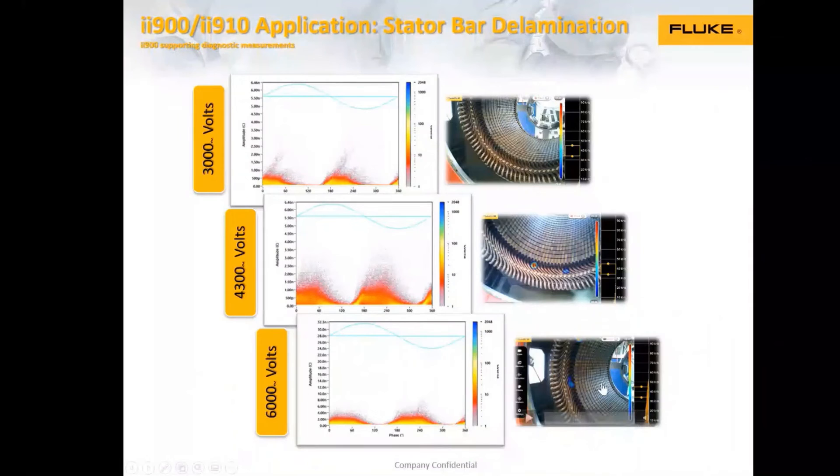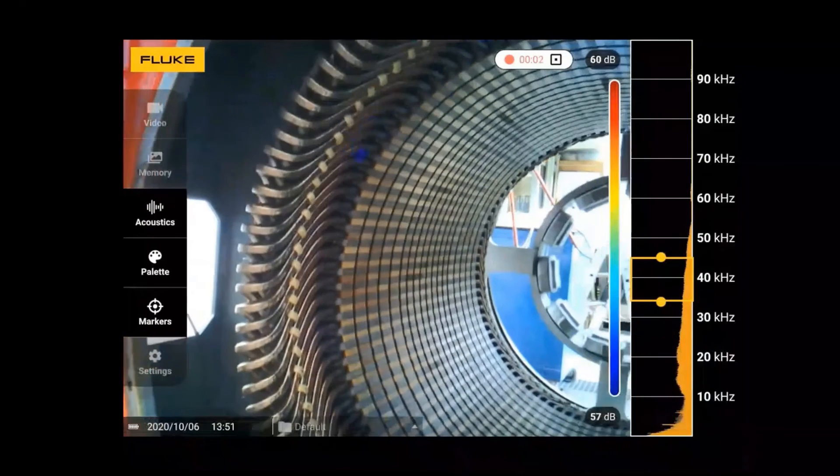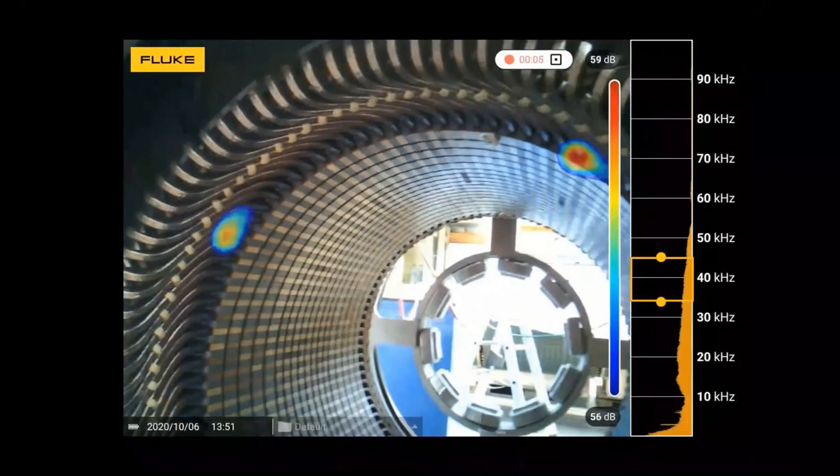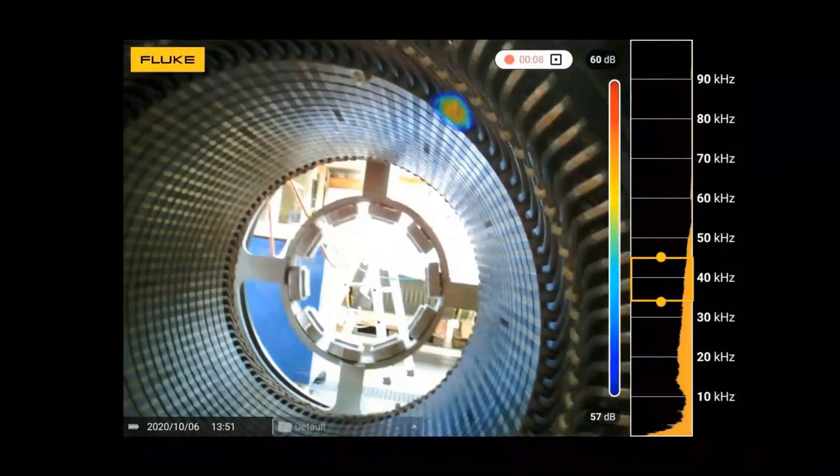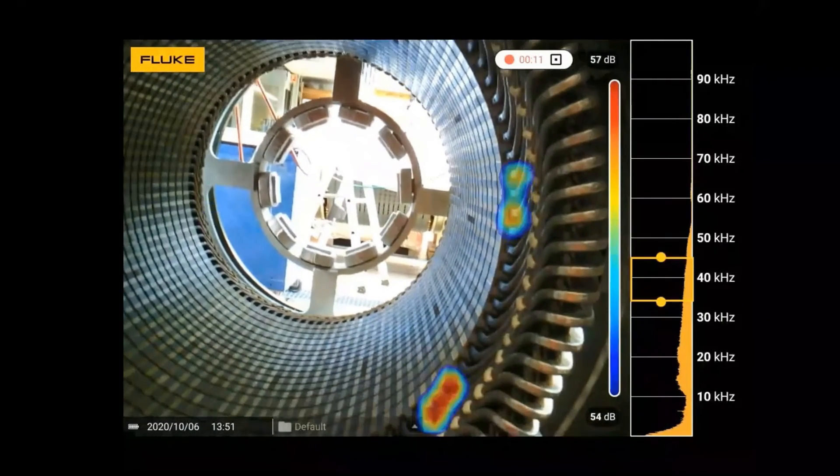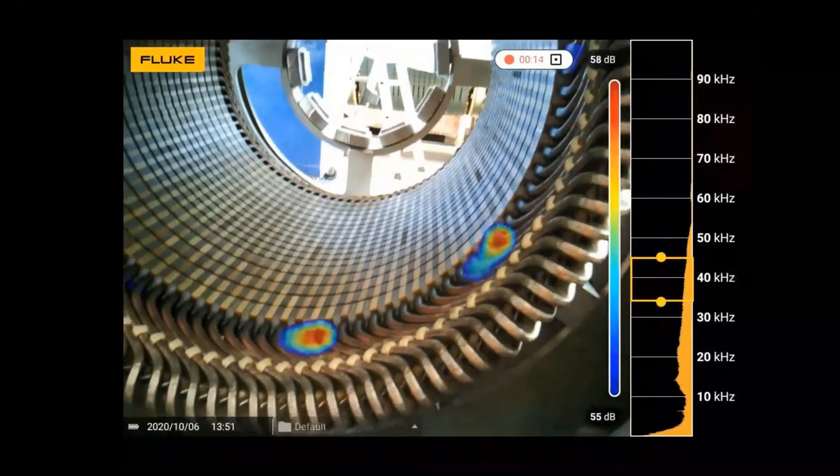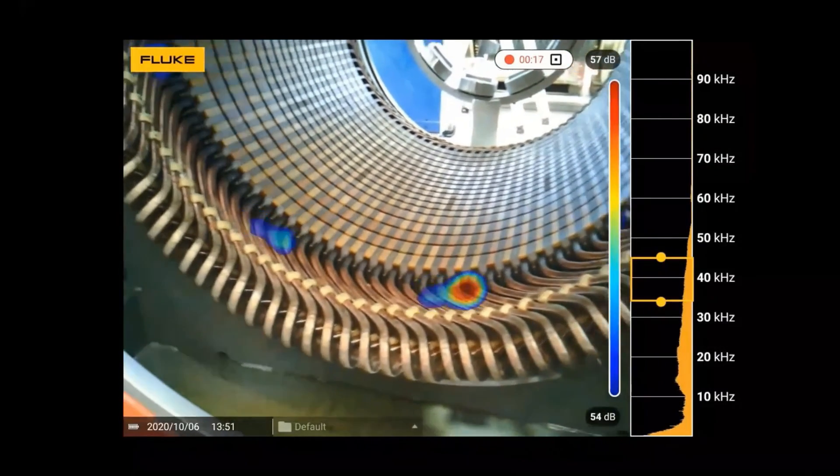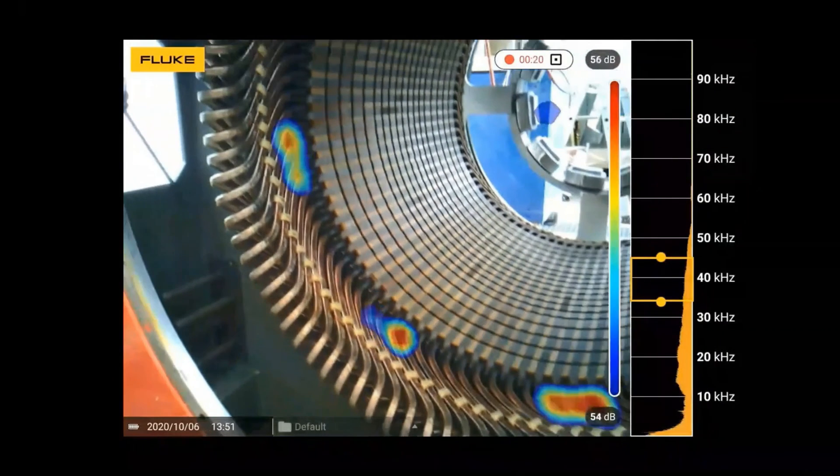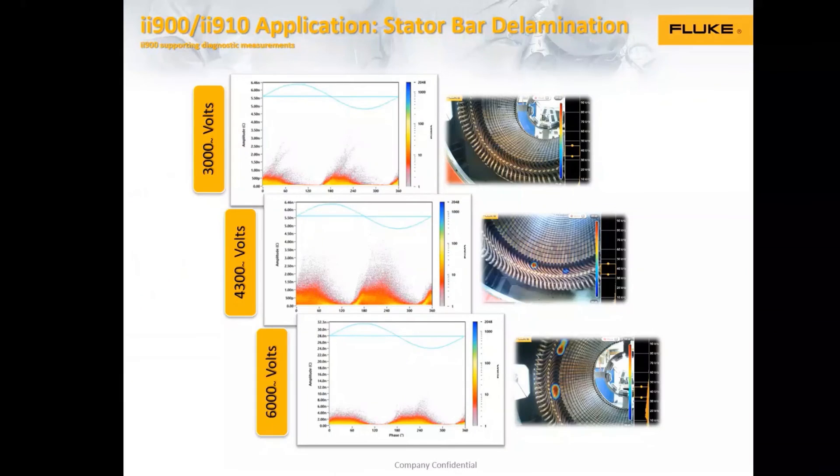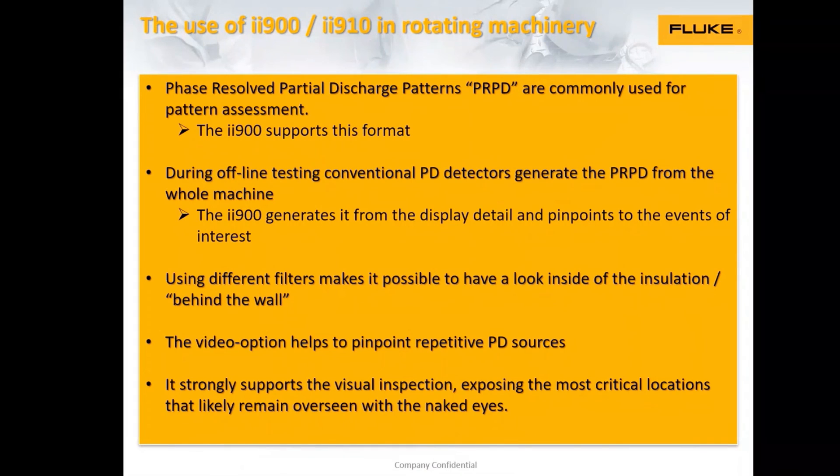And then the last one at highest voltage, now you see, because it's higher voltage, there's even more PD sources are triggered, and you see it's now generating PD all over. So again, if you have to make a repair and you have the chance to make a high voltage test, use the camera and you can see or identify the critical points that need the earliest repair or the most care. You can see with the camera relatively easy. So I come to a conclusion, phases of PD patterns are commonly used for pattern assessment and the camera is supporting this.